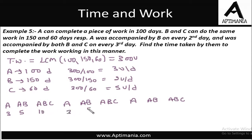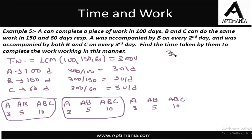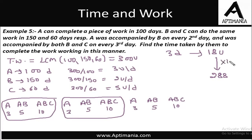On the first day A alone completes 3 units. On the second day A and B working together complete 5 units. On the third day all three working together complete a total of 10 units. Then again 3, then 5, then 10, then 3, 5, 10 — this is a cycle of 3 days, and in 3 days the total work completed is 18 units. We need to complete 300 units, but 300 is not a multiple of 18. The closest multiple of 18 to 300 is 288, which we get by multiplying 18 by 16. So in 48 days the total work completed is 288 units.